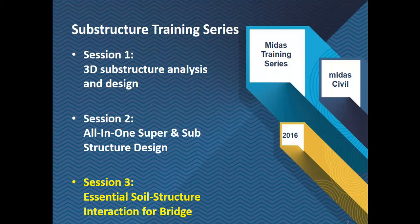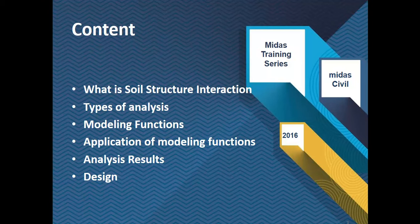We also went over the design features in the program in the first session. Then in the second session we combined the superstructure and the substructure and did an all-in-one model in which we merged the two parts and then did the design of it. Now we're going to talk about the essential soil-structure interaction for bridges — what it is, the types of analysis related to it, the modeling functions available in the program, how to apply those functions, and how to check results in MIDAS CIVIL. After that we'll go over the design features.